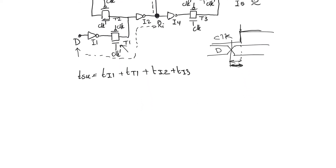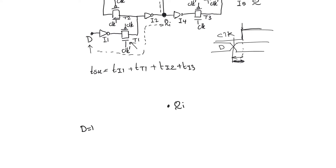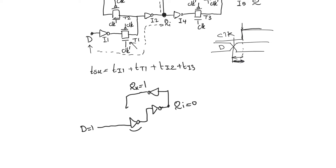To understand why QX matters, consider a scenario where D equals 1, QI is initially 0, and therefore QX is initially 1. This is during the zero phase of the clock, with the feedback path closed. We give D enough time to cross transmission gate T1, inverter I1, and inverter I2, so QI updates to 1, the value of D. However, if we immediately raise the clock without giving enough time for the new value to propagate through inverter I3, we open T1 and close transmission gate T2, completing the feedback path.